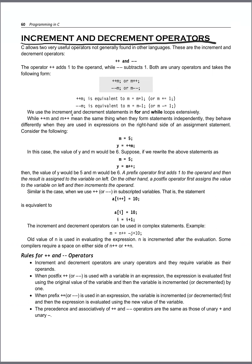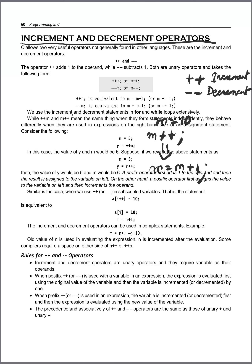There are two operators: one is the double plus sign and one is the double minus sign. The double plus sign is known as the increment operator and the double minus sign is known as the decrement operator. The increment operator means if m has value 10 and you write m++, this is equivalent to m = m + 1, meaning increasing the value of m by one.